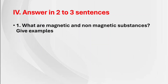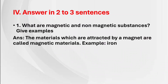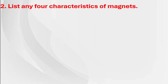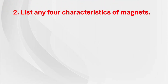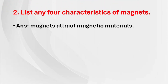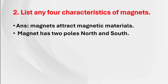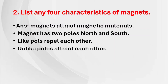Fourth main — answer in 2 to 3 sentences. First question: What are magnetic and non-magnetic substances? Answer: Materials which are attracted by a magnet are called magnetic materials — example, iron. Materials which are not attracted by the magnet are called non-magnetic materials — example, paper. Second question: List any 4 characteristics of magnets. Answer: Magnets attract magnetic materials; a magnet has 2 poles (north and south); like poles repel each other; unlike poles attract each other.